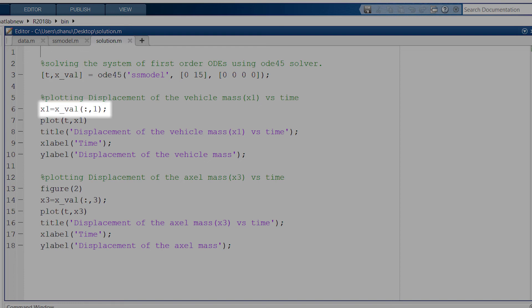In this x1 variable, I have stored the first column of this x_val matrix which contains the values of our state variable x1 corresponding to the time values in t. This state variable x1 represents the displacement of m1. In this line, I have plotted the graph of x1 versus time.